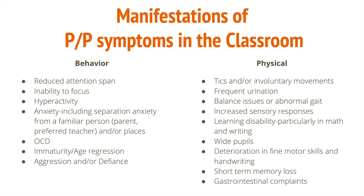Let's talk about symptoms we may see in the classroom. In terms of behavior, we will see reduced attention span. Kids may look fidgety, they may have outbursts or poor impulse control, inability to focus, and hyperactivity. You may see anxiety, including separation anxiety from a familiar person — and consider that they might have separation anxiety from you as the educator, and may not want to leave you to go to recess, gym, or down the hallway to the bathroom. You may see OCD, immaturity, and age regression. Our daughter, who is nine, will sometimes revert back to when she was about three or four. You may also see aggression and defiance in the classroom.